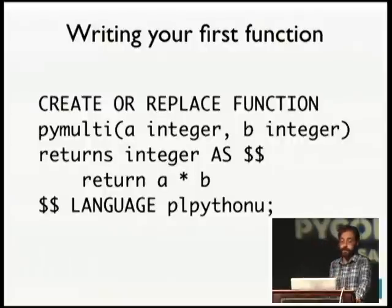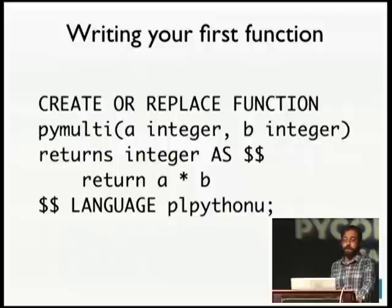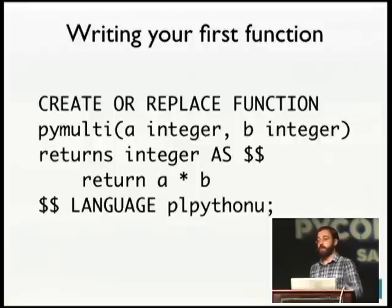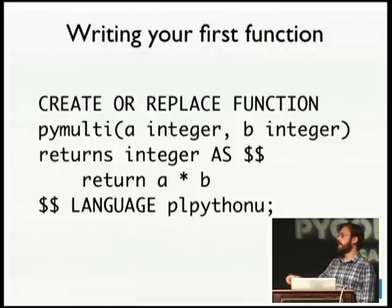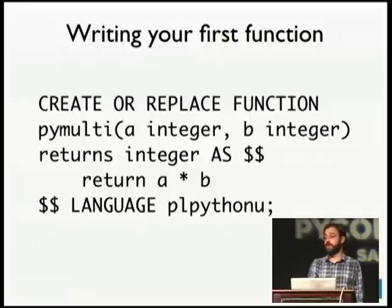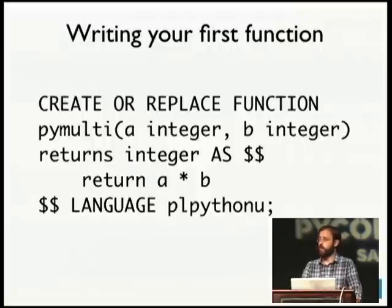Let's start by writing our first function. This is a very simple and silly function — you'd be much better off using multiplication in SQL itself, but this illustrates how you go about creating a function. You can do CREATE OR REPLACE, which is one of the few places in Postgres where you can do that. You define a name, the arguments it takes in SQL types — int4, int2, int8, varchar, text — then what it returns. It can return void. And you use dollar-dollar quoting to avoid any weird quoting of your actual source.